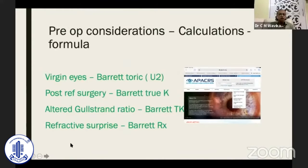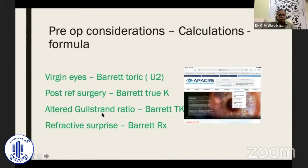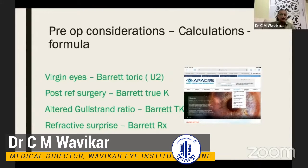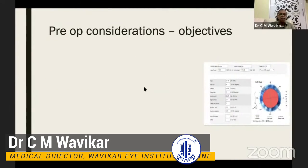Regarding which formula to use: for virgin eyes use the Barrett Toric Calculator, which is the gold standard formula. For post-refractive surgery use Barrett True-K. I also like to take help of the ASCRS website. For unusual cases like post-keratoplasty, keratoconus, or corneal scar, use Barrett TK — where TK stands for Total Keratometry, the vector summation of actual readings of the anterior and posterior corneal astigmatism. If there is a refractive surprise, the Barrett RX formula is available. Our dependence on Barrett has increased hugely.